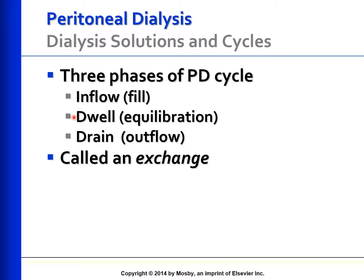The duration of the dwell phase is about 20 to 30 minutes to 8 or more hours, depending on the method — either automatic peritoneal dialysis or continuous ambulatory peritoneal dialysis. The drain phase takes about 15 to 30 minutes and may be facilitated by gently massaging the abdomen or changing position. These three phases — inflow, dwell, and drain — together are called one exchange.